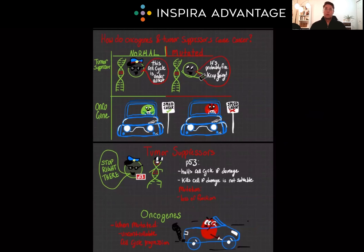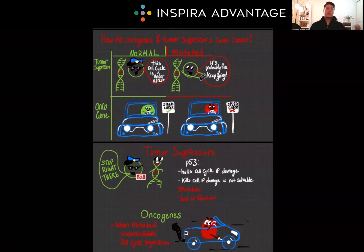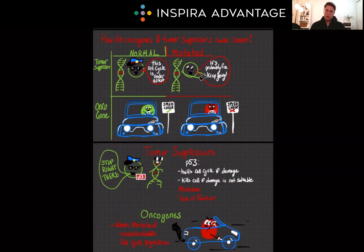Understanding tumor suppressors and oncogenes is absolutely crucial for grasping the fundamentals of cancer biology, which you will 100% need for the MCAT. Don't miss out on these easy questions. The big things to take away: cancer is caused by mutations in genes, not mutations in proteins — it is at the genome level. Tumor suppressor genes fix mutations, cause dysregulated cells to go into apoptosis, and slow down the cell cycle. Oncogenes speed up cell growth, prevent apoptosis, and may cause metastasis. These are the things to keep in mind when tackling a cancer-based question on the MCAT. Thank you for watching, and I'll see you next time.